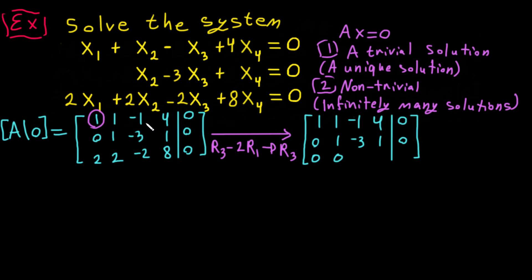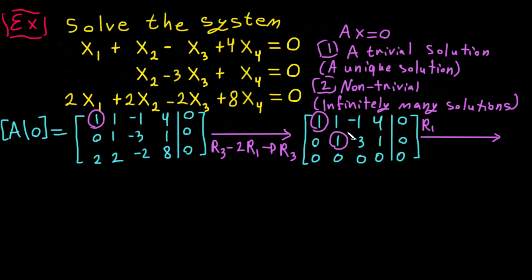Continuing the row operations: two minus two is zero, and eight minus eight is zero, so the last row becomes all zeros. Now we have a leading one in row 2, and we need to make the entry above it zero. So R1 becomes R1 minus R2. This gives: row 1: 1, 0, 2, 3.